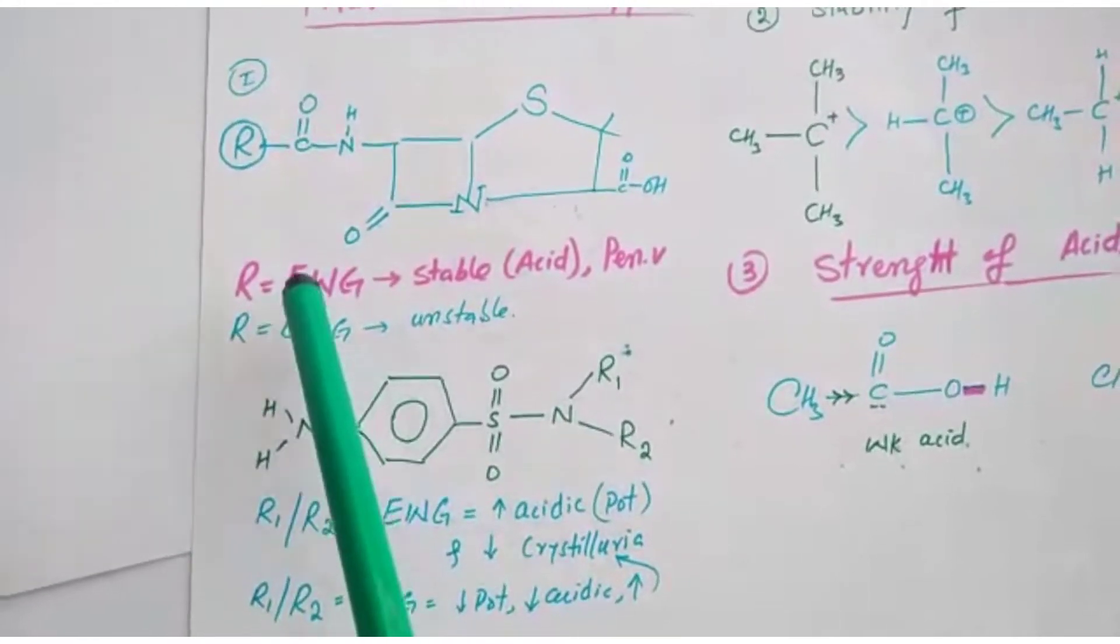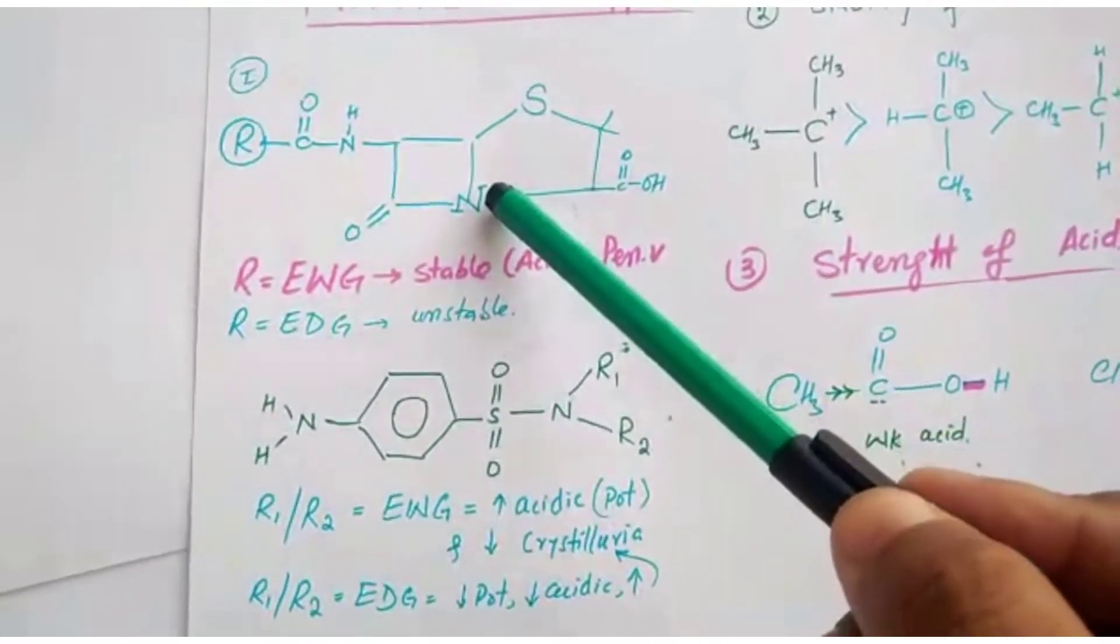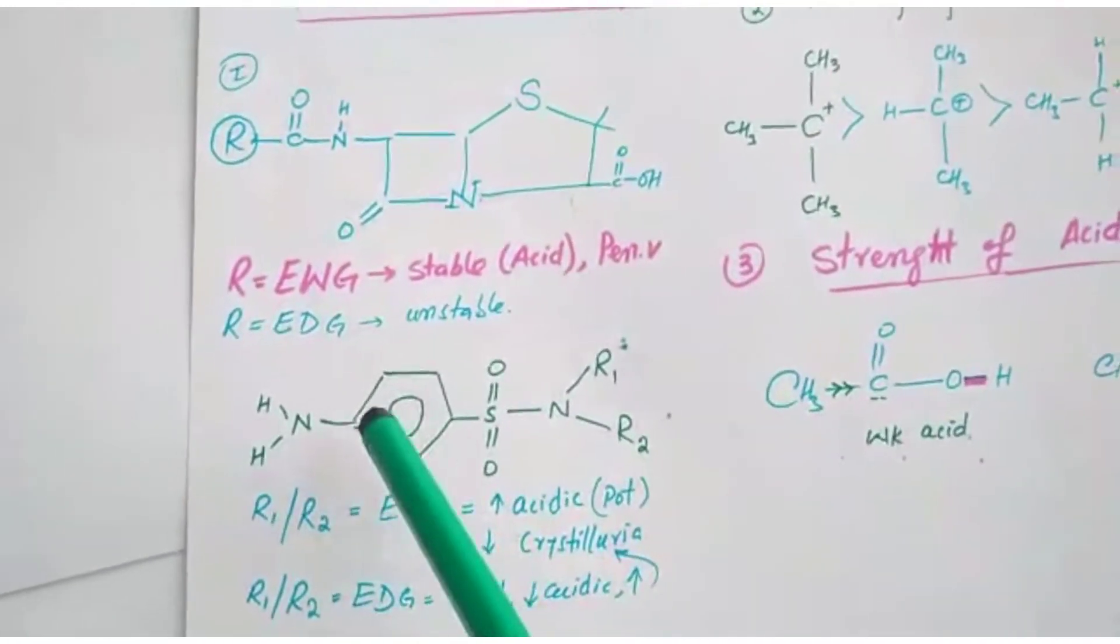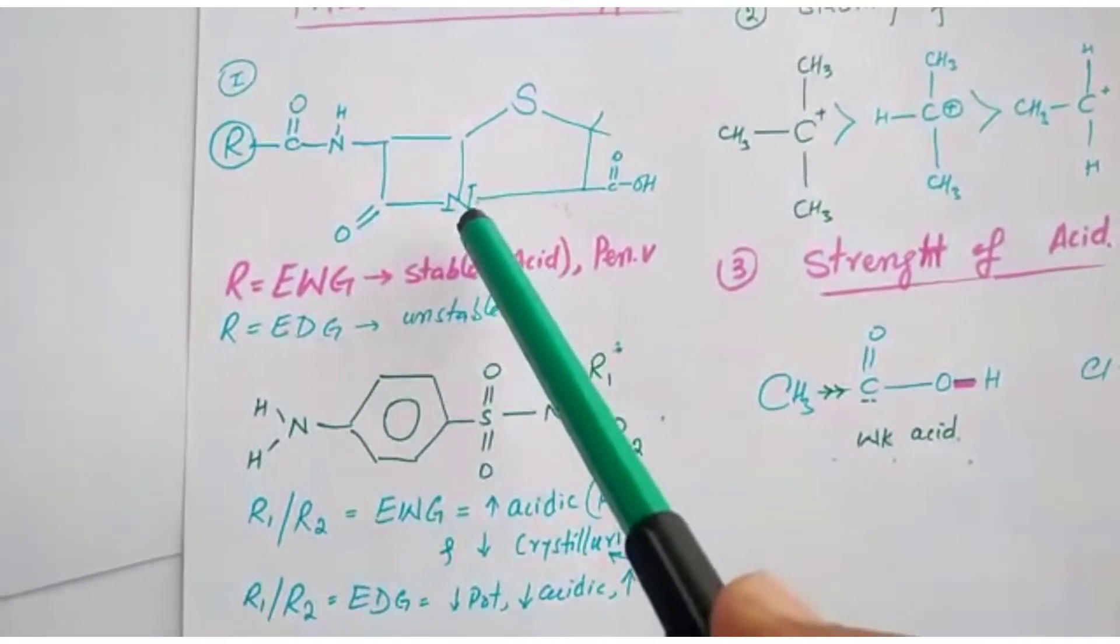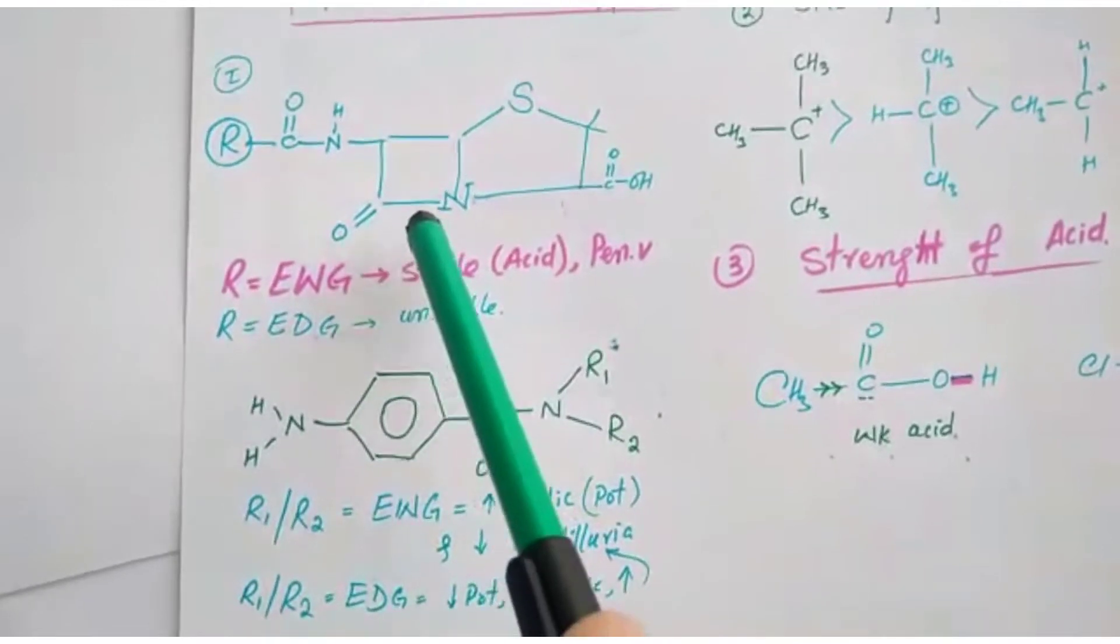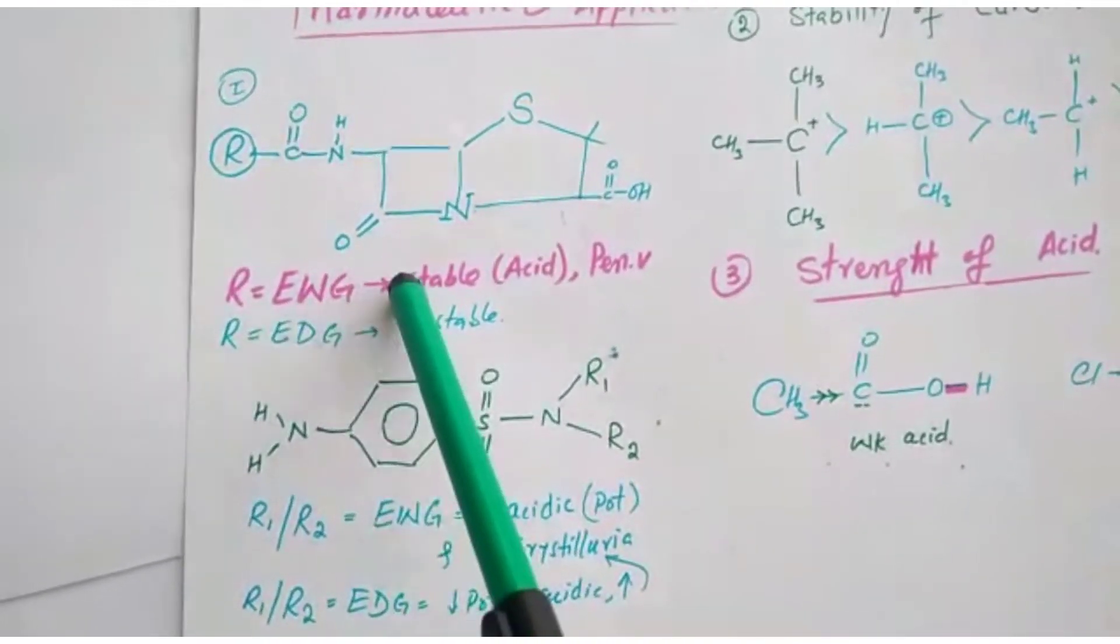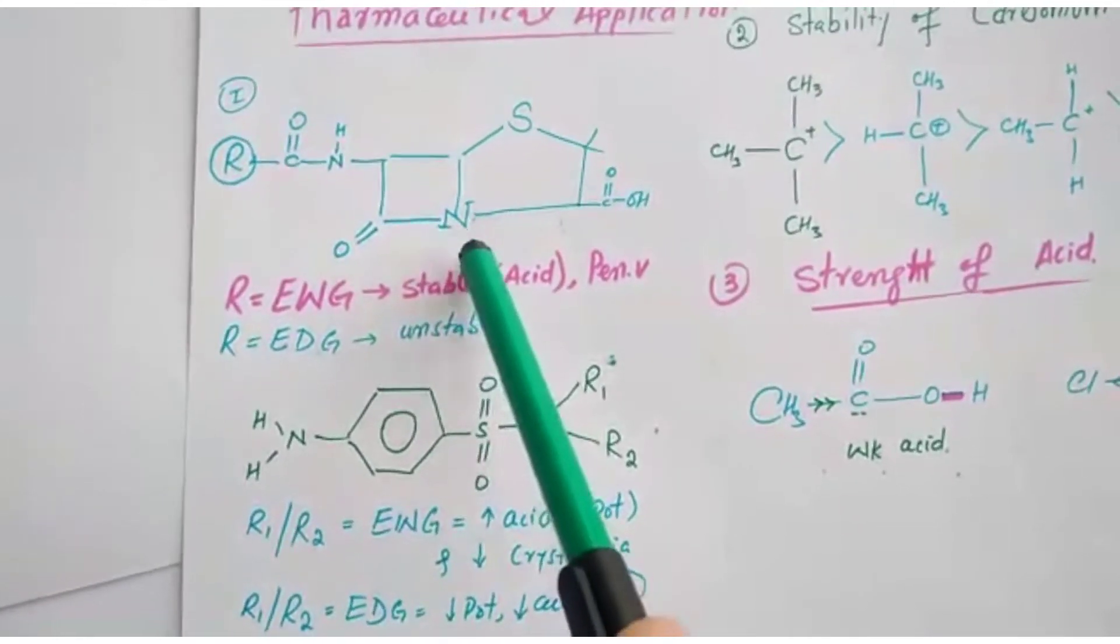Electron donating group, the penicillin will be unstable and nucleophiles or electrophiles will attack here, and the antibacterial activity of the penicillin will be affected. For more detail on penicillin and electron withdrawing, electron donating effect, please visit my YouTube channel, the video on medicinal chemistry of penicillin.